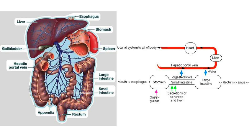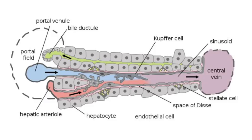The liver breaks down substances like ammonia, metabolic waste, drugs, alcohol, and chemicals — it's the main organ in detoxification of the blood. If we take a closer look at the liver, we see that cells are lined up to act like a filter for the bloodstream. Special cells called Kupffer cells ingest and break down toxic matter.